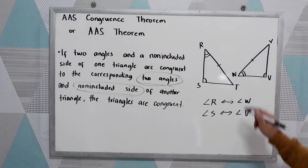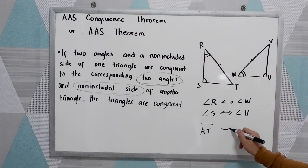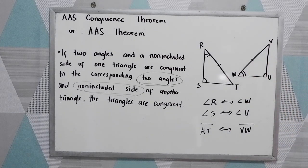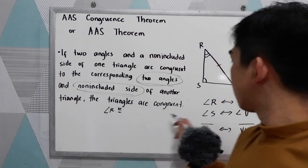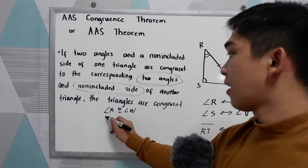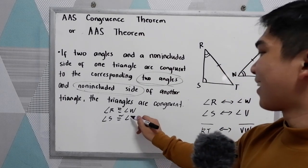And the non-included side RT corresponds to VW. Now after finding the different corresponding parts of the triangles, we can say that angle R is congruent to angle W, and angle S is congruent to angle U.